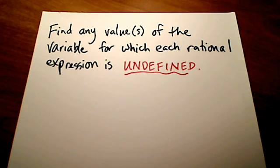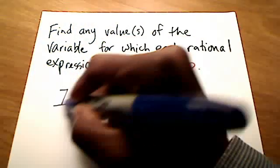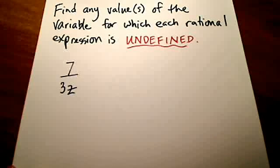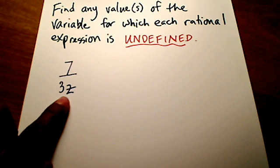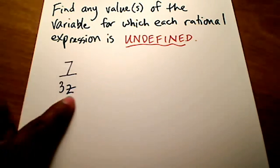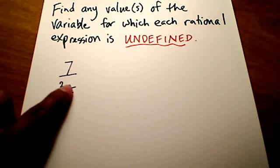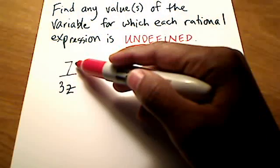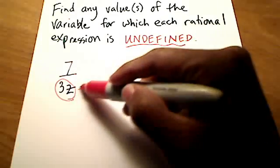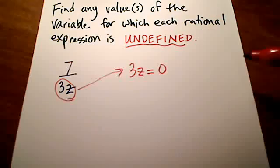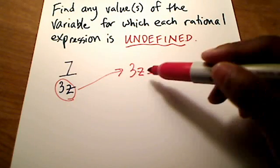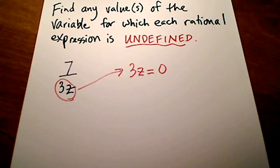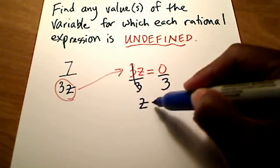Let me show you a few examples. Here's one. I have 7 over 3z, and the question is, what value would this variable z have to be to make this expression undefined? Well, the only time this thing would be undefined is if my denominator is a zero. What I'm going to do is ignore the numerator and focus on the denominator. I'm going to set the denominator equal to zero and solve for z.